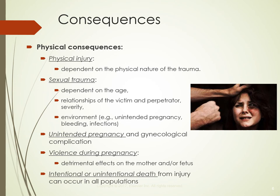Sexual violence can occur in the context of child abuse, intimate partner violence, or an isolated incident. Health consequences depend on the age of the victim, the relationship between victim and perpetrator, the circumstances of the environment, and the severity and types of violence accompanying the incident. Health consequences may include unintended pregnancy and gynecologic complications such as bleeding, infection, pain during intercourse, chronic pelvic pain, sexually transmitted diseases, HIV transmission, and urinary tract infections.